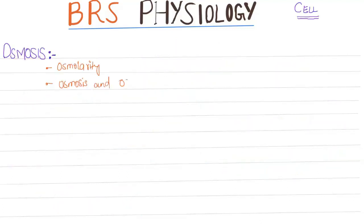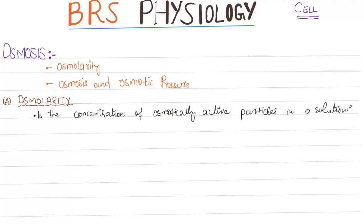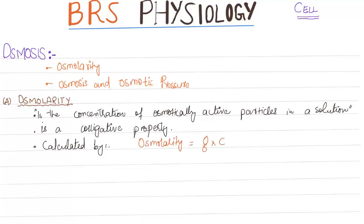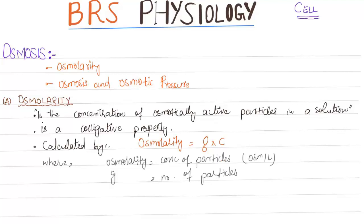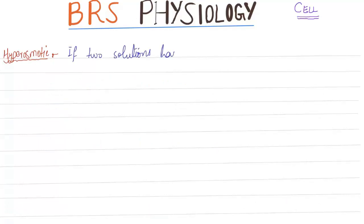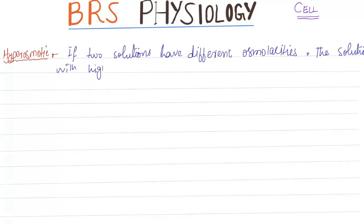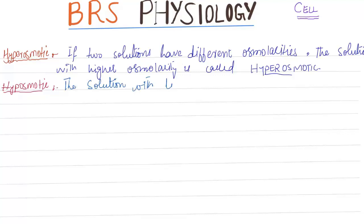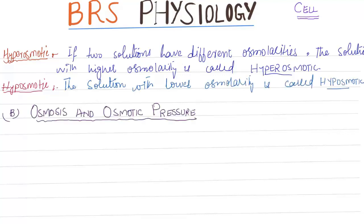Osmosis. We will talk about osmolarity, osmosis, and osmotic pressure. Osmolarity is the concentration of osmotically active particles in a solution. It is a colligative property, calculated as osmolarity equals g times C, where g is the number of particles in solution — g for NaCl is 2 and g for glucose is 1 — and C is concentration. Isosmotic: if two solutions have the same calculated osmolarity, they are isosmotic. Hyperosmotic: the solution with higher osmolarity is called hyperosmotic. The solution with lower osmolarity is called hyposmotic.